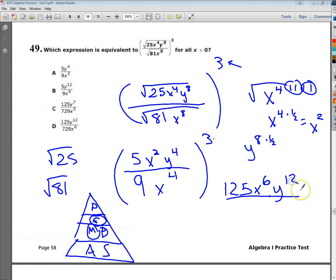So instead of doing 2 to the 3rd power, you want to do 2 times 3. 4 times 3. And on the bottom, 9 to the 3rd power is 729. And then it's 4 times 3, which is 12.